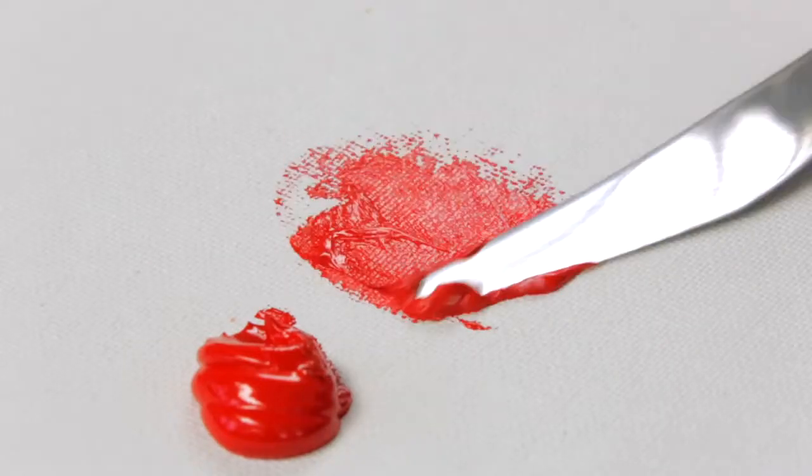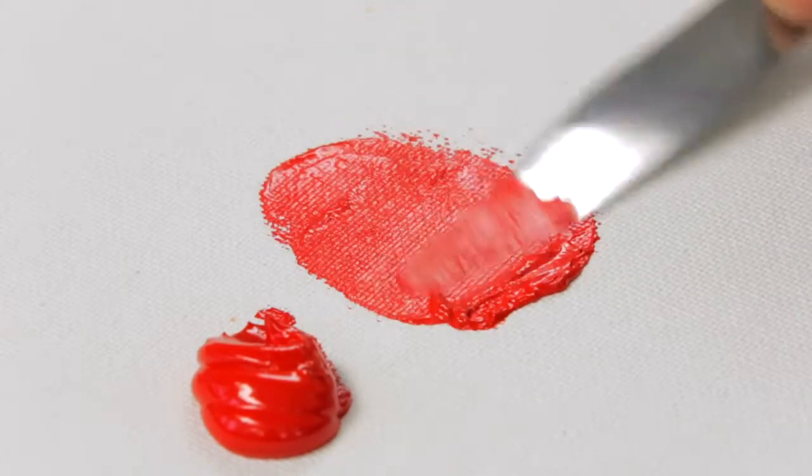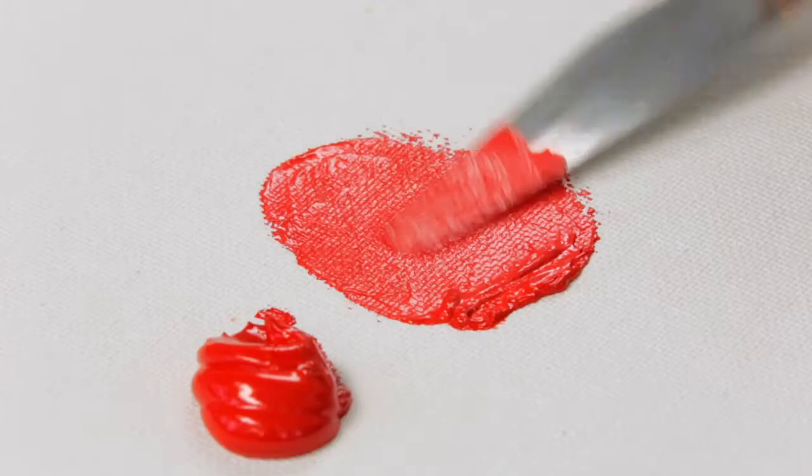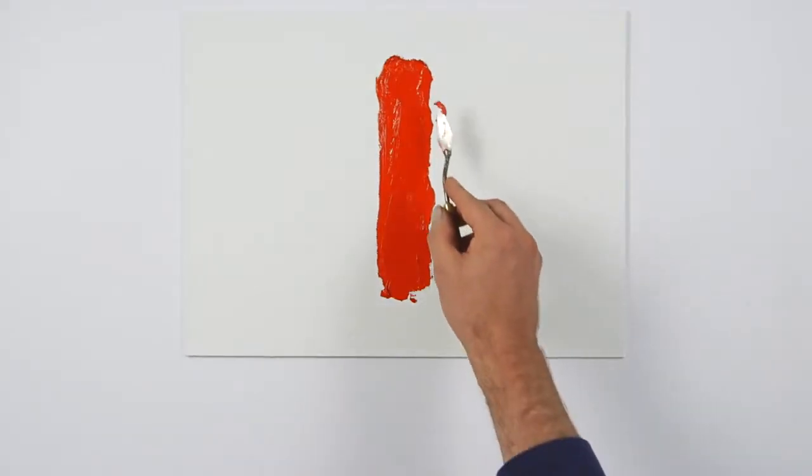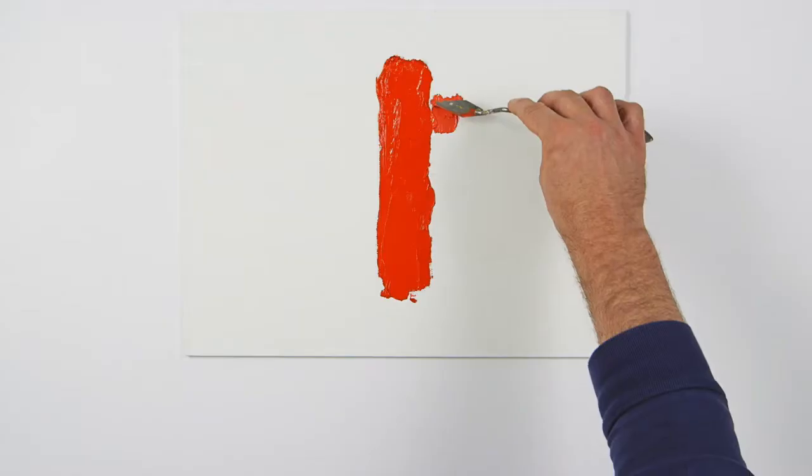I'm going to start by mixing in titanium white to raise the value of the red. I'll make five values, adding more white as I go along. This set of values or tones could also be referred to as tints.